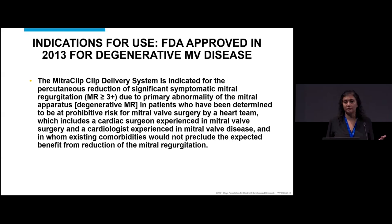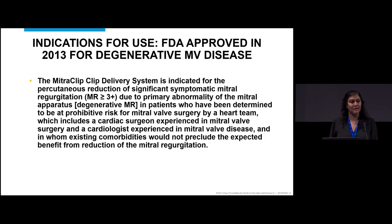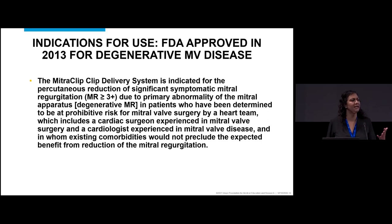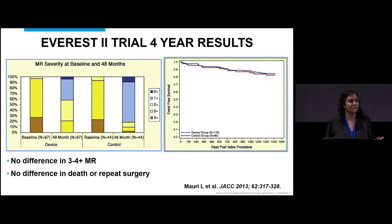In 2013, we got approval for MitraClip for organic or degenerative mitral regurgitation. It's indicated for percutaneous reduction of significant symptomatic mitral regurgitation — greater than or equal to 3-plus — due to primary abnormalities of the valve, in patients deemed too high risk for mitral valve surgery by a heart team that includes a surgeon and a cardiologist with expertise in valve disease, and who don't have other comorbidities likely to cause earlier death.